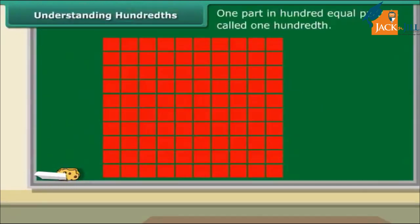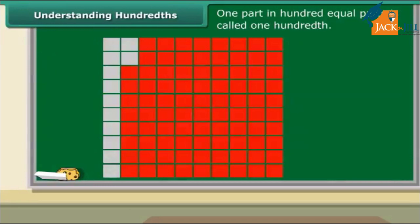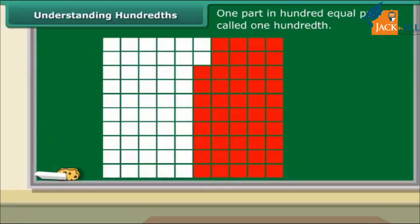One part in 100 equal parts is called hundredth. Each small square is called hundredth of the whole square. In decimal notation, we read it as 0.01. 12 shaded squares will make 12 hundredths or 0.12. 33 shaded squares will make 33 hundredths or 0.33. 52 shaded squares will make 52 hundredths or 0.52.